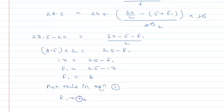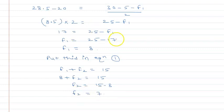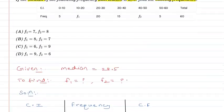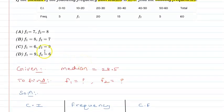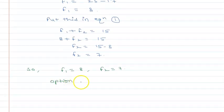So F1 equals 8. Putting this into Equation 1: 8 plus F2 equals 15, so F2 equals 15 minus 8, which is 7. Therefore F1 is 8 and F2 is 7. Checking against the options, this matches option B: F1 equals 8 and F2 equals 7. Hence option B is correct. I hope you have understood — thank you.